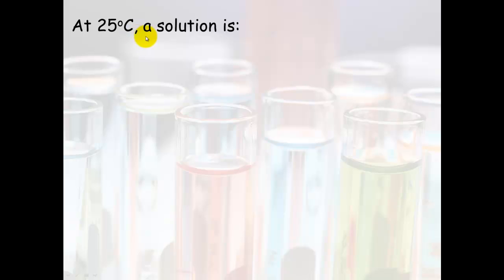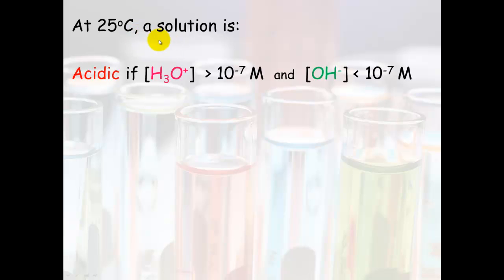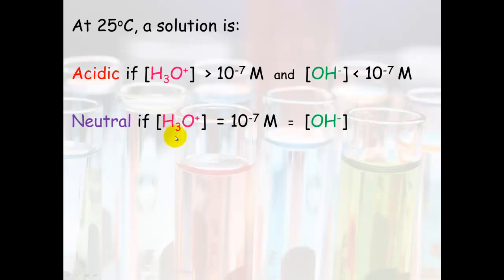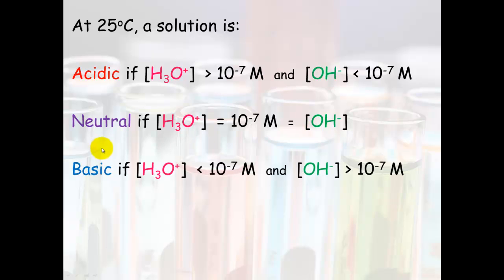At 25°C, a solution is considered acidic if the hydronium concentration is greater than 10⁻⁷ M, and the hydroxide concentration will therefore be less than 10⁻⁷ M. It is neutral if the hydronium concentration equals 10⁻⁷ M, which also equals the hydroxide concentration. It is basic when the hydronium concentration is less than 10⁻⁷ M and the hydroxide concentration is greater than 10⁻⁷ M.